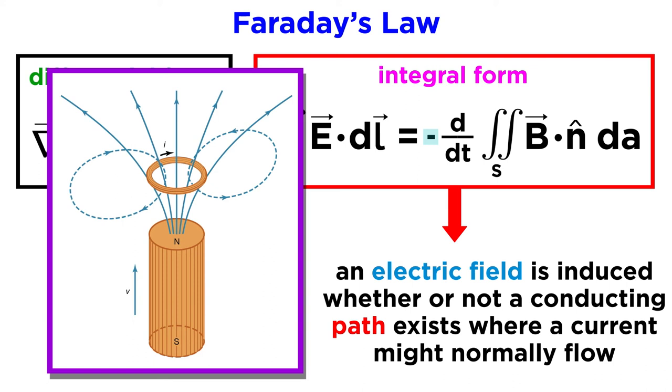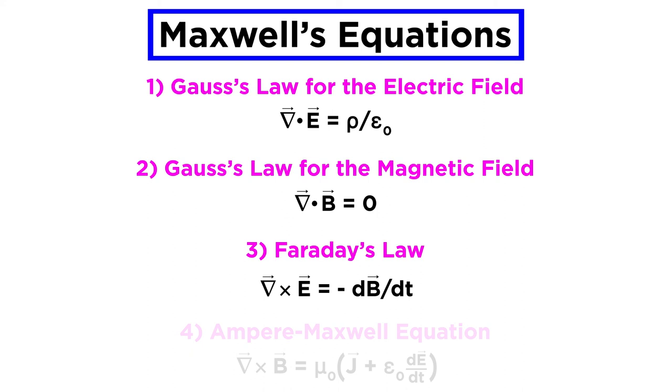It is important to understand that a changing magnetic flux induces an electric field whether or not a conducting path exists where a current might normally flow. Lenz's law tells us the direction of the circulation of the induced electric field around a path, even if no conduction current actually flows along that path.